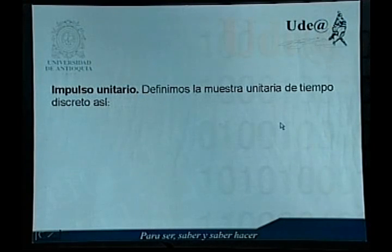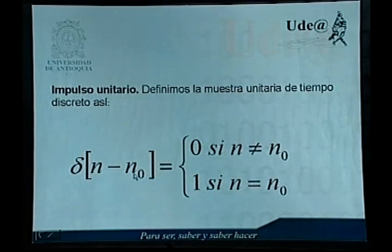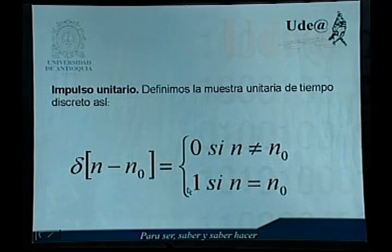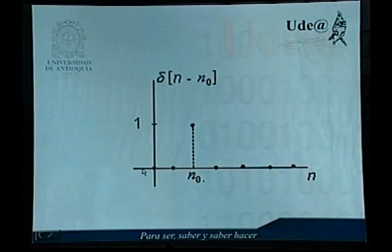El impulso unitario es la función que vamos a definir a continuación. Definimos la muestra unitaria de tiempo discreto de la siguiente manera: delta de n menos n sub 0 va a ser igual a 0 si n es diferente de n sub 0, y 1 si n es igual a n sub 0. En esta función de impulso unitario la función es igual a 0 para todos los valores del argumento, excepto cuando n es igual a n sub 0, donde la función vale 1. Este es el gráfico de esa función de impulso unitario: los valores de la función son 0, están sobre el eje n, y solo para el valor n sub 0 la función toma el valor de 1.